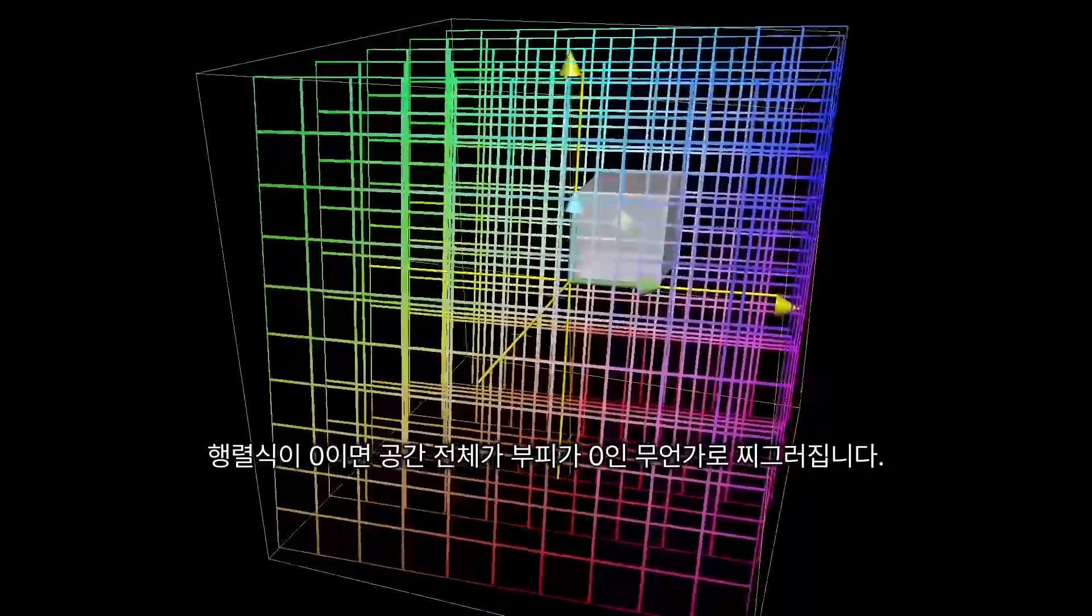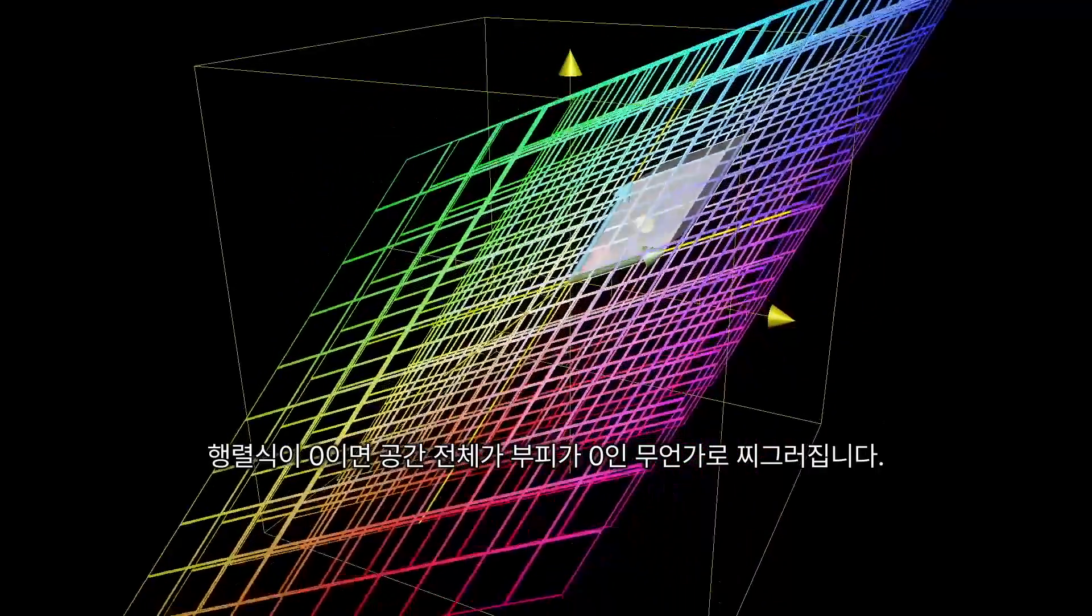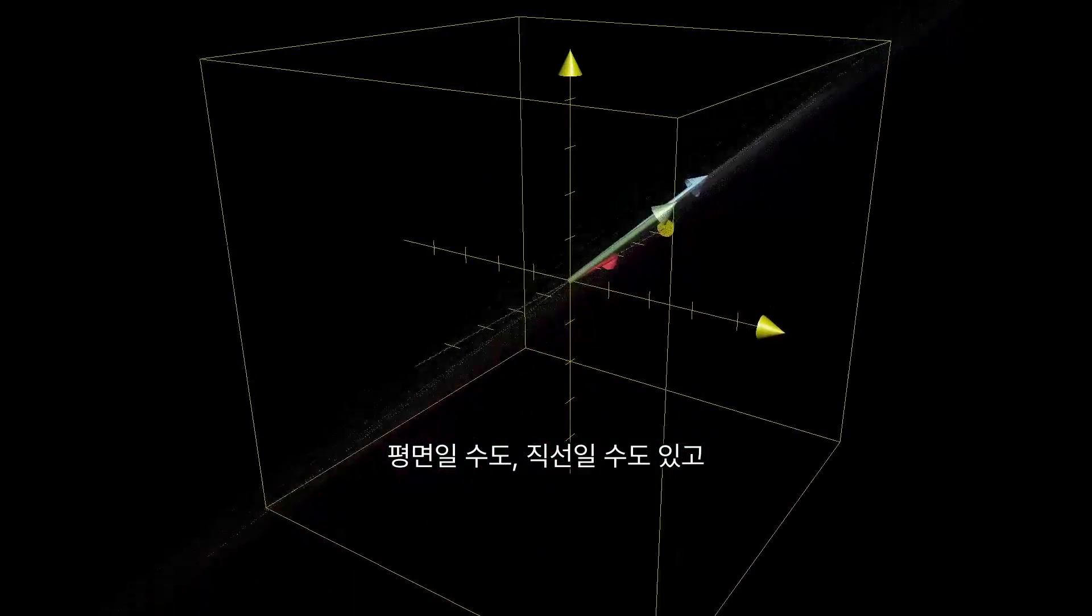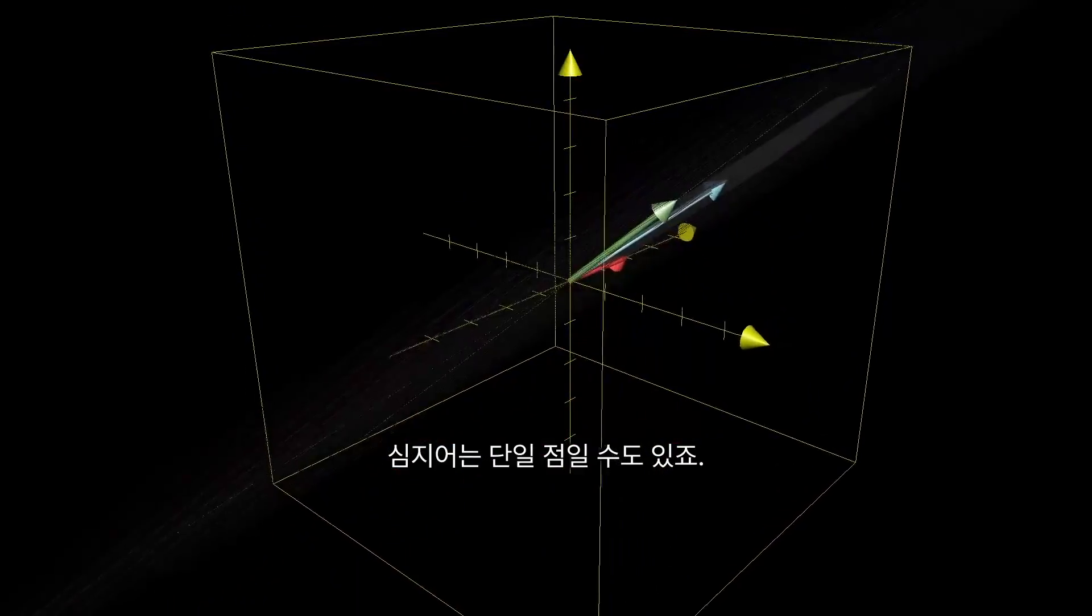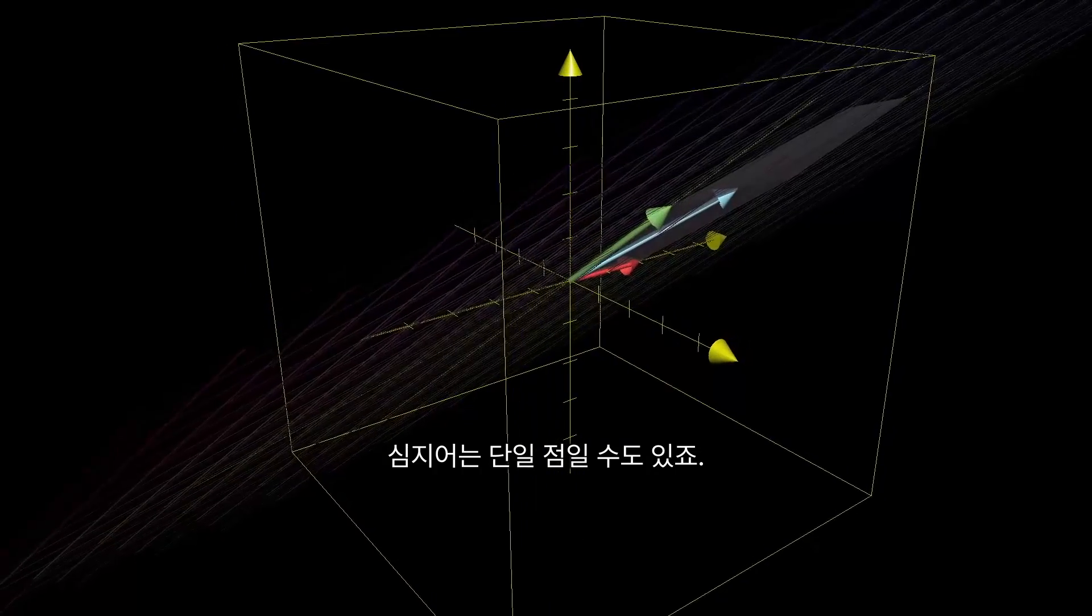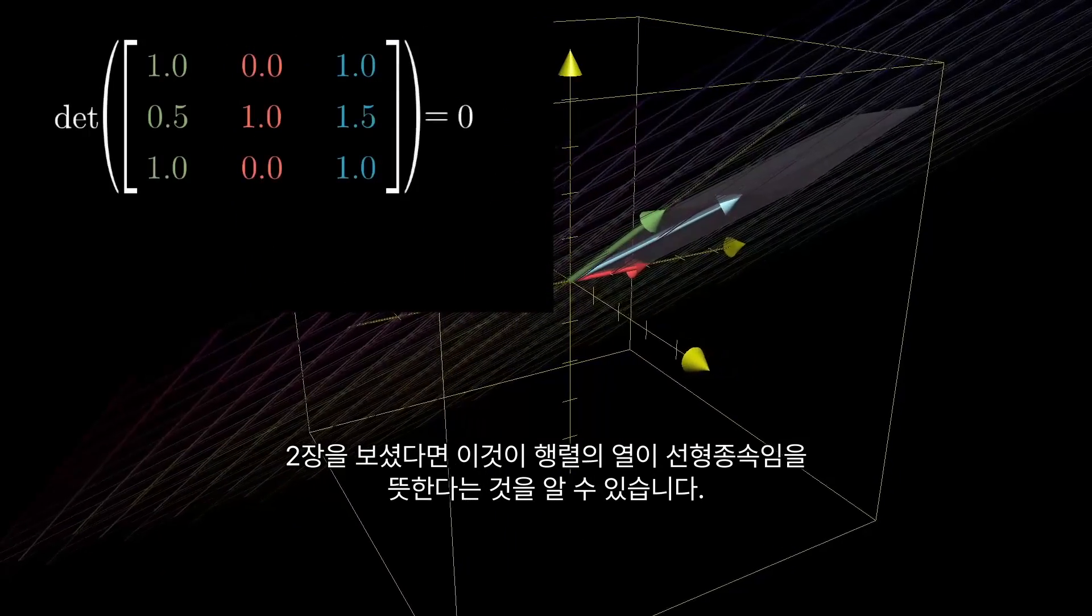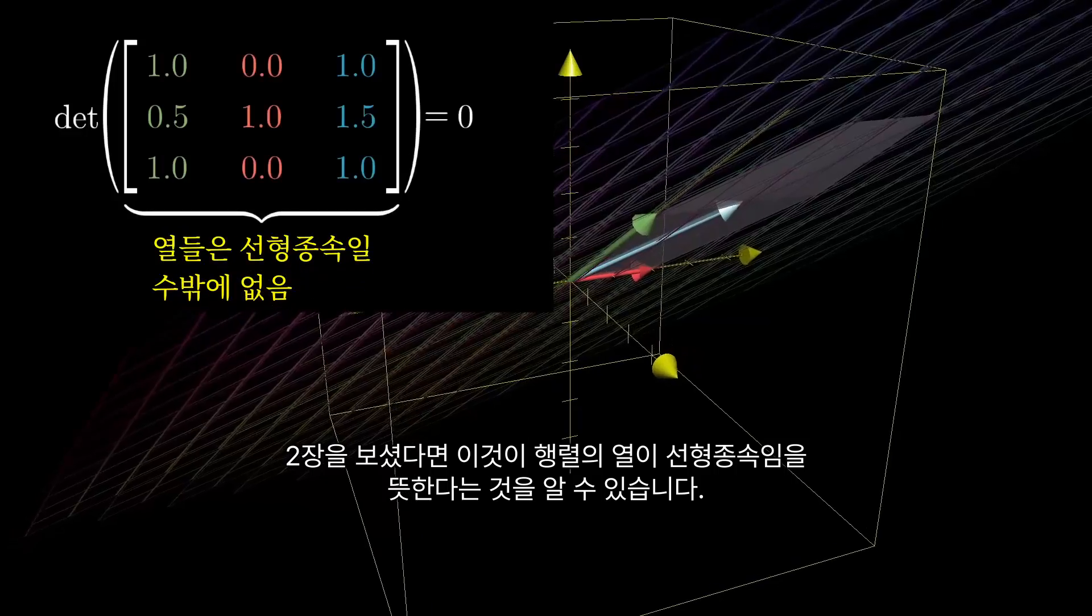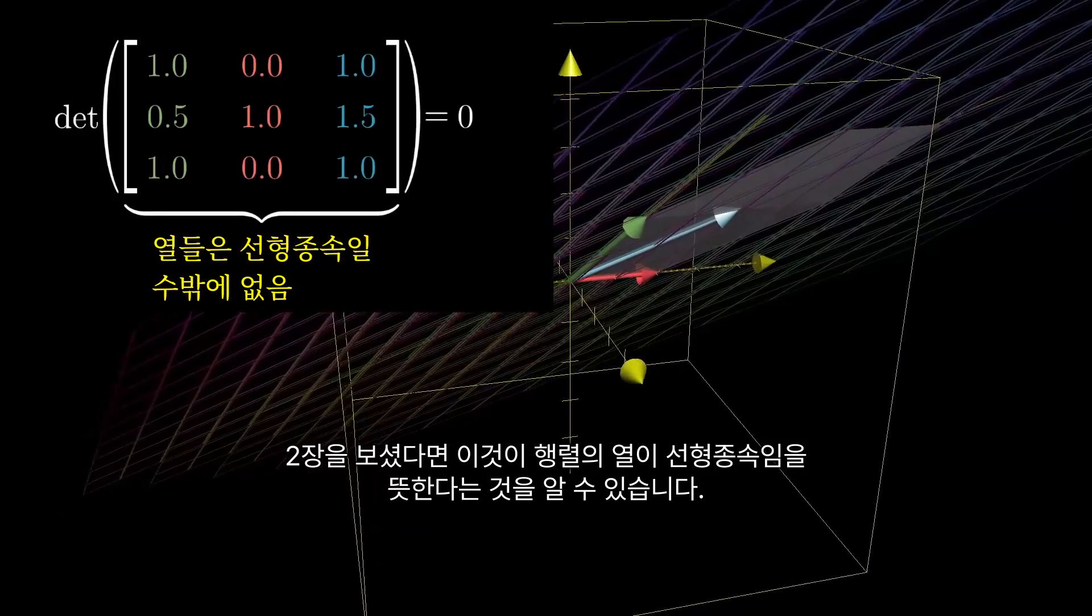A determinant of zero would mean that all of space is squished onto something with zero volume, meaning either a flat plane, a line, or, in the most extreme case, onto a single point. Those of you who watched chapter 2 will recognize this as meaning that the columns of the matrix are linearly dependent. Can you see why?